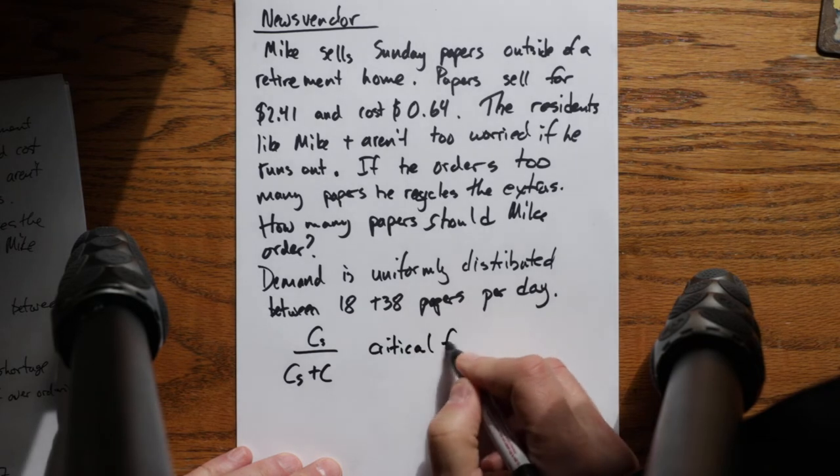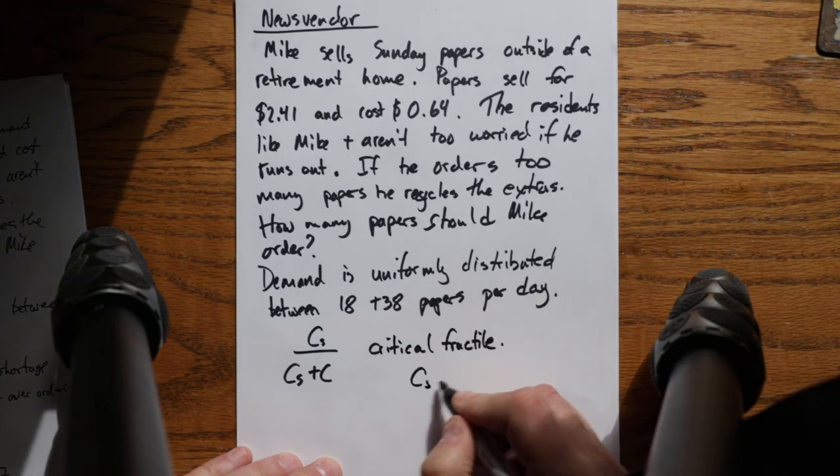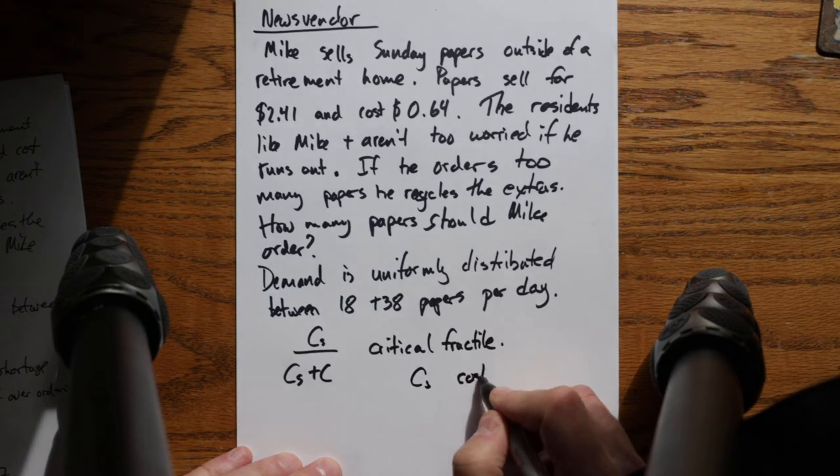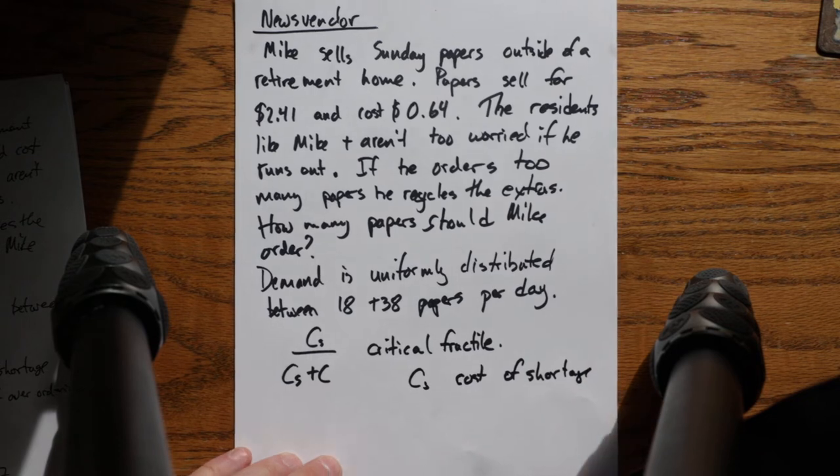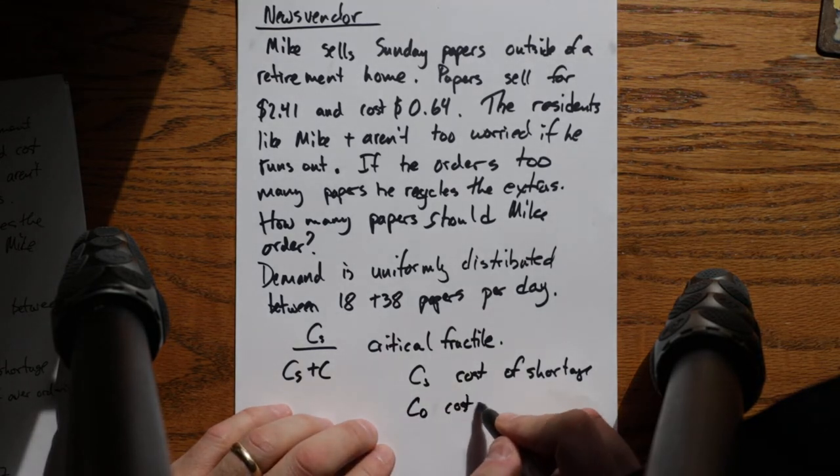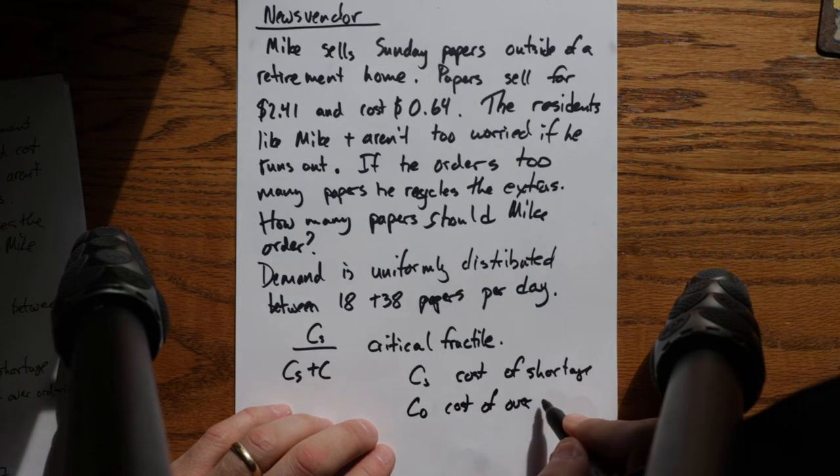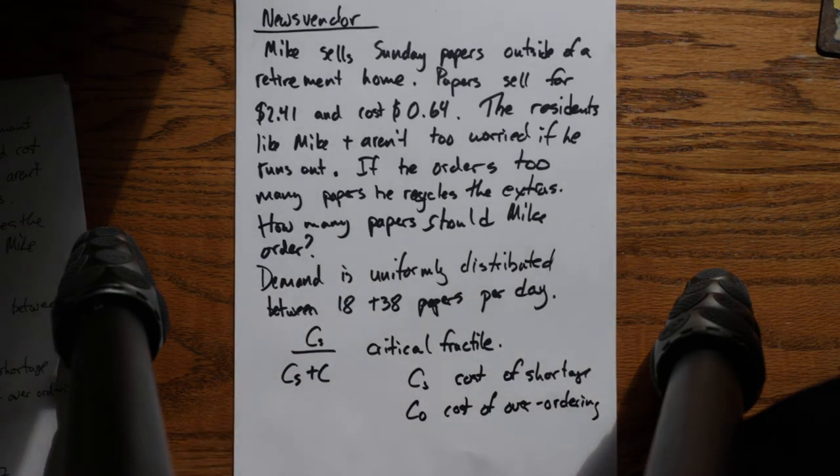It's called the critical fractile. CS is the cost of shortage, so what happens when you run out, like what do you lose. And CO is the cost of over ordering.